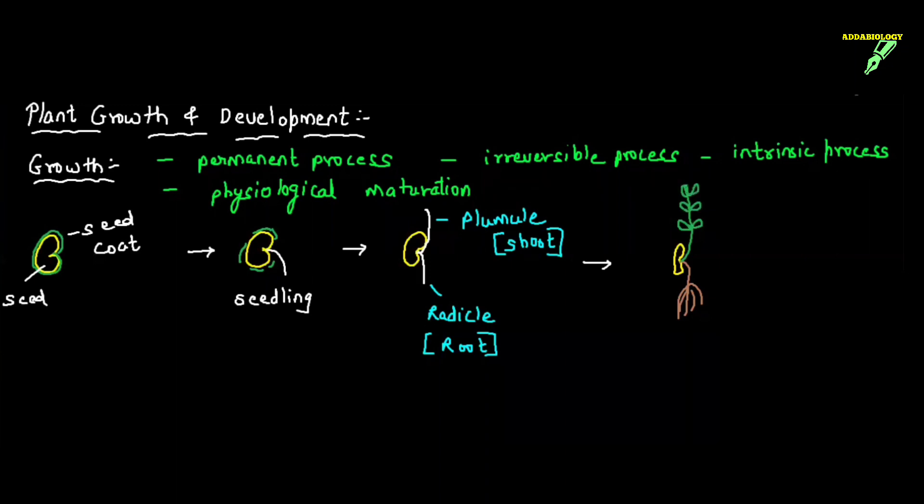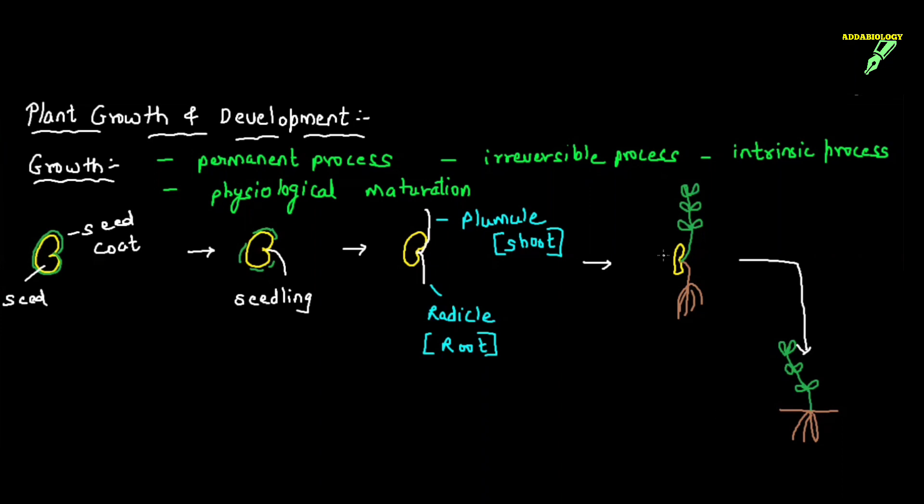This radical and plumule will grow further, finally forming the root system and the shoot system, and after that it will grow into a plantlet. This plantlet will further grow and form a huge tree. So we can say this is a permanent process. There is no such possibility that this plantlet will again become a seed. This entire process that I have shown in the diagram is indicating plant growth.